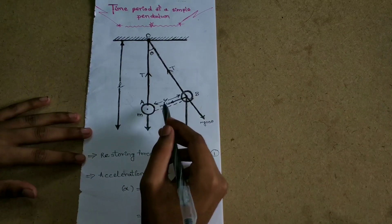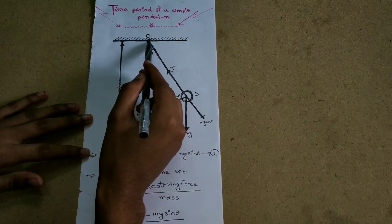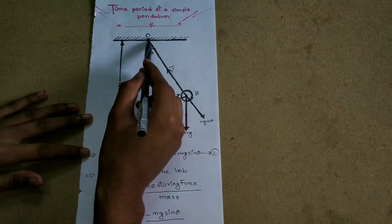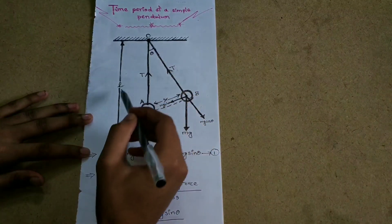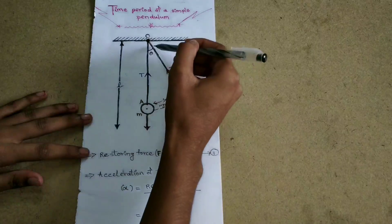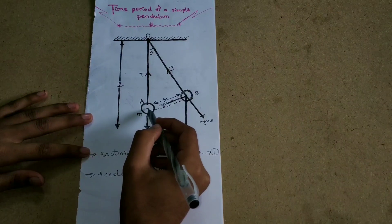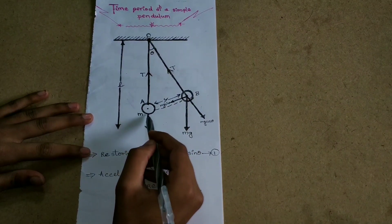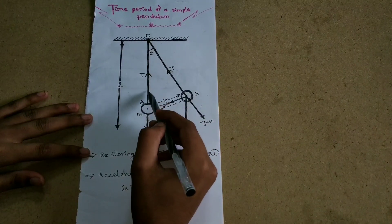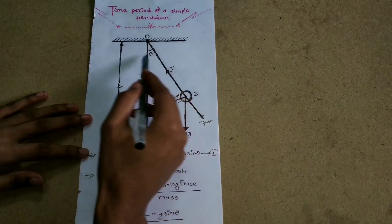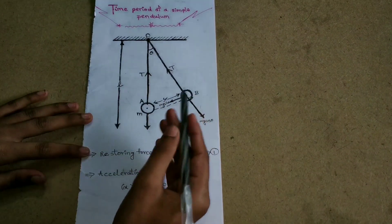Now we draw the diagram. Point O is fixed, and the inextensible thread is attached there. The length of the thread is L.